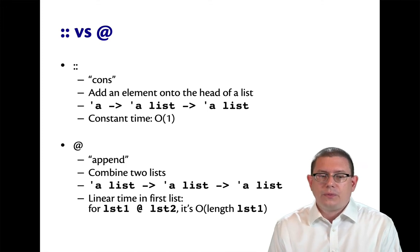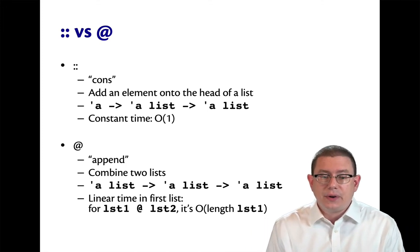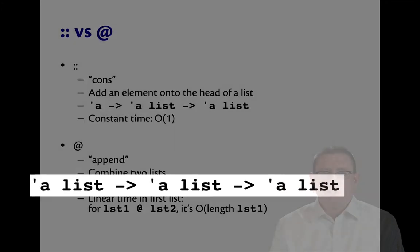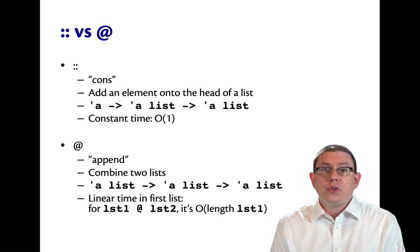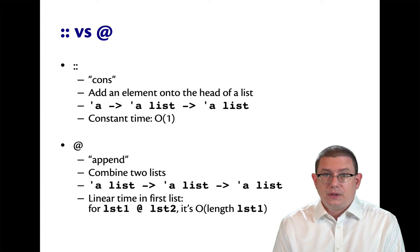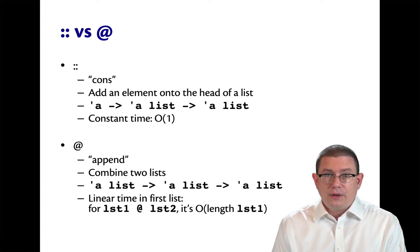The append operator, written with the at sign, combines two lists together. Its type reflects that: both of its arguments have type alpha list, so the entire type is alpha list arrow alpha list arrow alpha list. If you compare those two types, the first argument to both operators is different — for the cons operator it's alpha, and for the append operator it's alpha list.